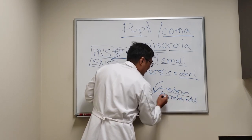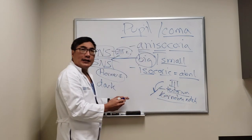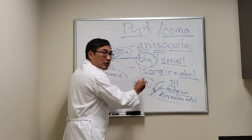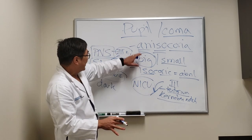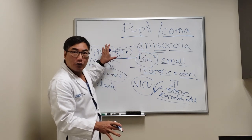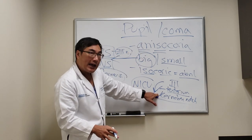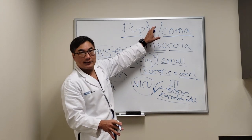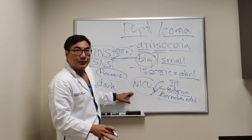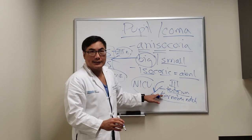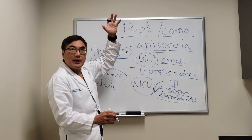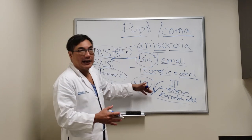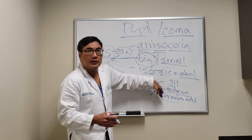At the notch in the tentorium, cranial nerve three passes — which is why in the NICU, nurses are always checking the pupil looking for anisocoria. A blown pupil from third nerve palsy is evidence of a potential herniation syndrome, and that person will have acute onset of coma — it's an emergency. This is called a false localizing sign, because the herniation is actually supratentorial, but the pupil problem indicates third nerve involvement from the brain herniating down into Kernohan's notch.